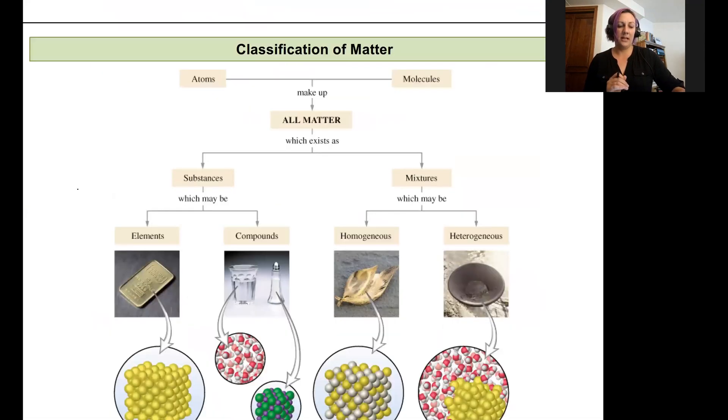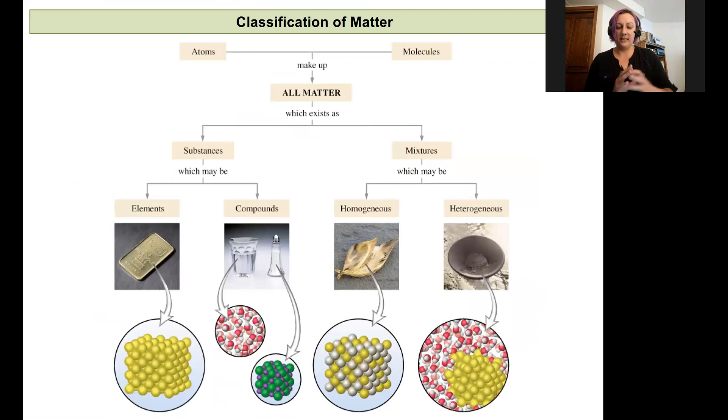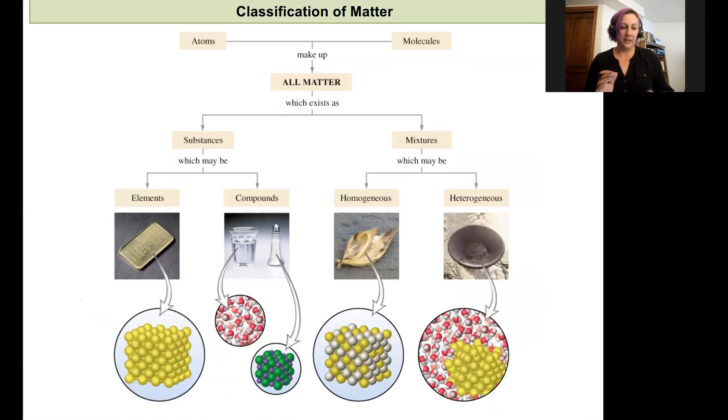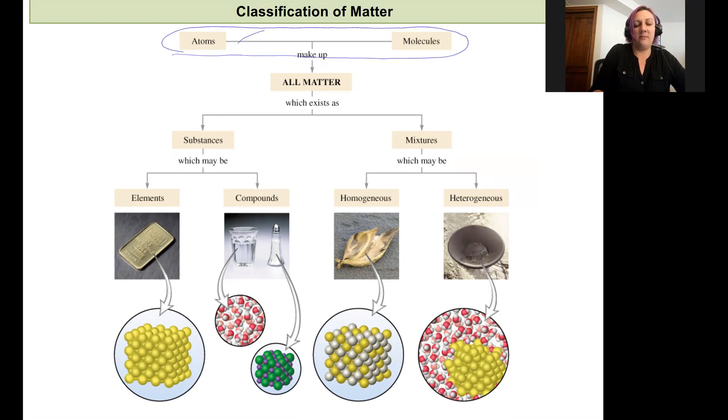Especially as scientists, we like to classify matter or classify everything. Here's some classifications of matter. If we're going to start with atoms, all molecules are made up of atoms. These are our foundation of what matter is. Atoms and then from atoms, we can build molecules. Together, these make up all matter. Matter is anything that's going to take up volume and have mass.